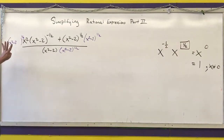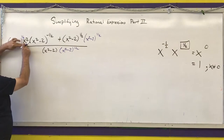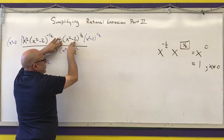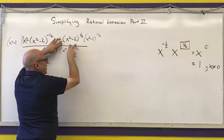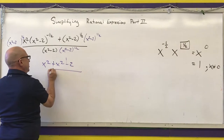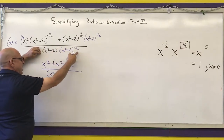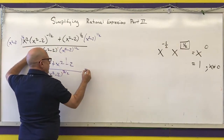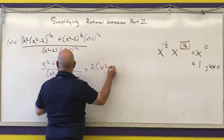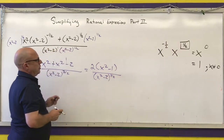Now I simplify. (x squared minus 2) to the one-half times (x squared minus 2) to the negative one-half — these two cancel to one, leaving x squared. Then (x squared minus 2) to the one-half times (x squared minus 2) to the one-half gives (x squared minus 2) to the first. In the denominator, (x squared minus 2) to the first times (x squared minus 2) to the one-half is three-halves. That gives me 2x squared minus 2 over (x squared minus 2) to the three-halves power.